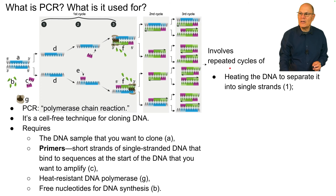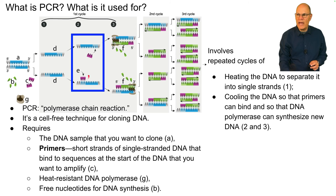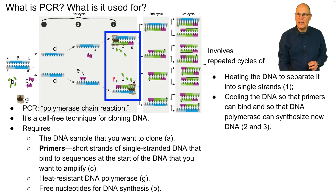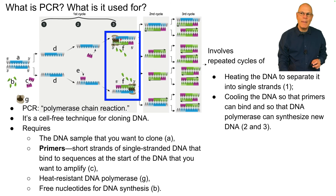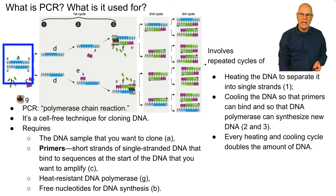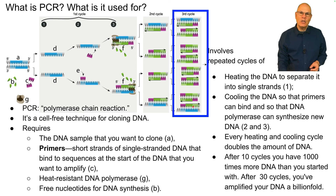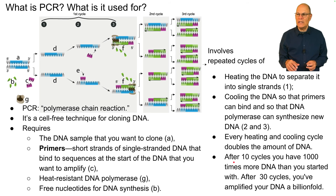PCR involves repeated cycles of heating the DNA to separate it into single strands by breaking hydrogen bonds, then cooling so primers can bind and DNA polymerase can synthesize new DNA by reading the template strand and sealing sugar phosphate bonds between nucleotides. Every heating and cooling cycle doubles the amount of DNA — starting with one piece, you get two, then four, then eight. After 10 cycles you have a thousand times more DNA, and after 30 cycles you've amplified your DNA a billion-fold.